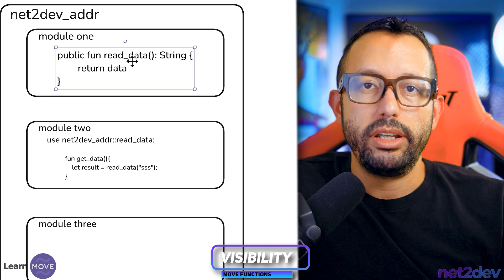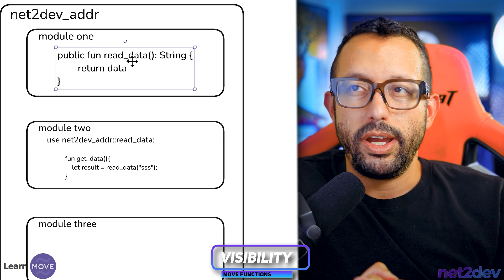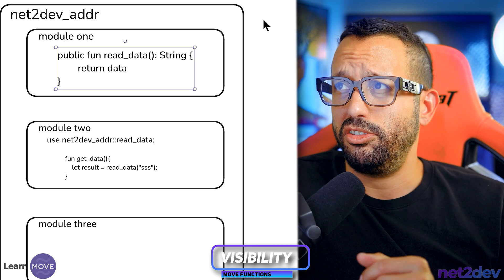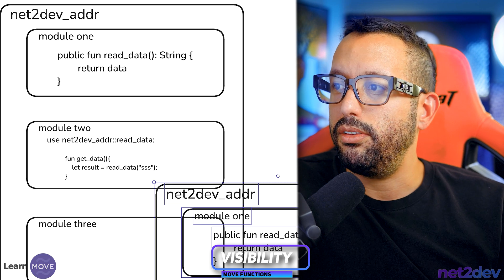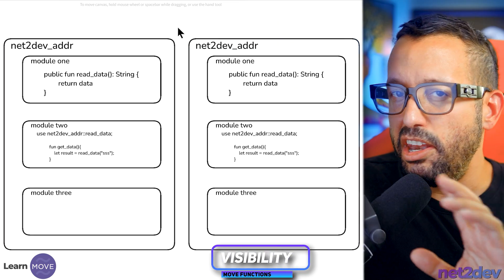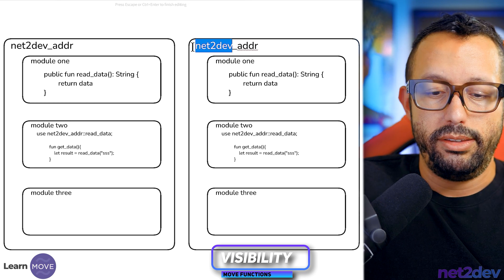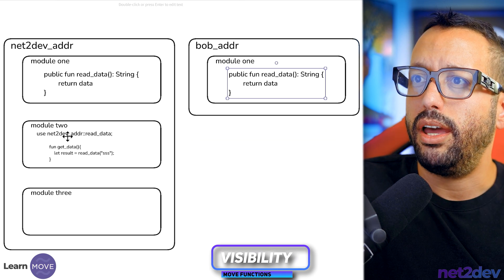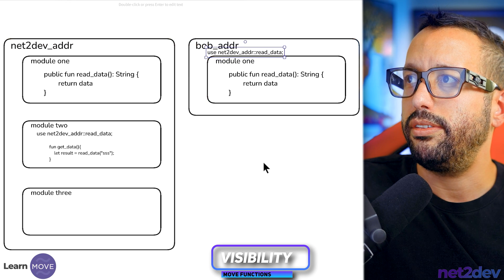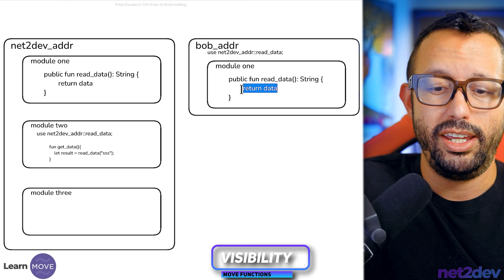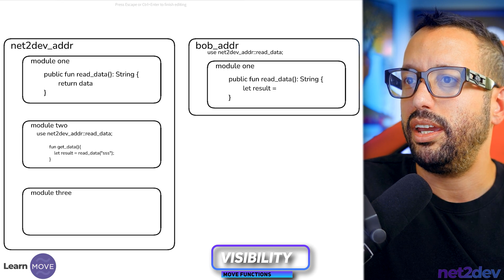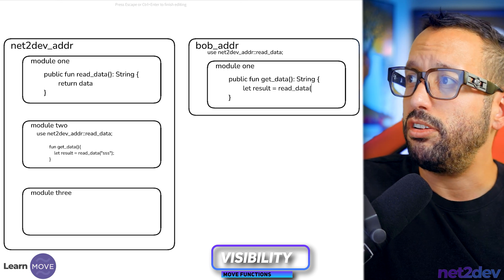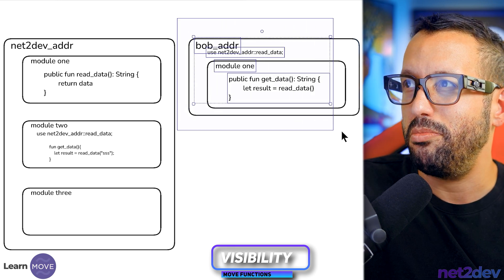Public visibility is good and bad. It gives flexibility to separate functions across modules, but there's a security concern. If another account on the blockchain — say 'bob' — decides to create a module and calls our module's public function, they can effectively do the same thing. Any external address can call that function, and that is a problem.